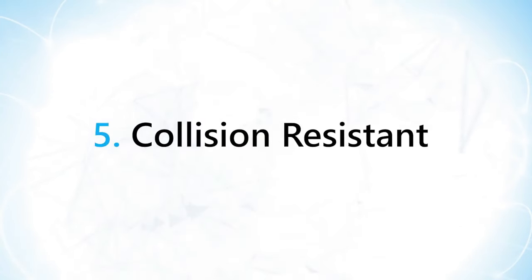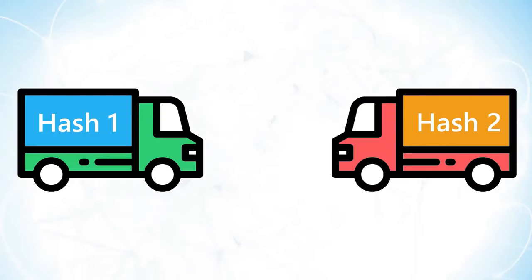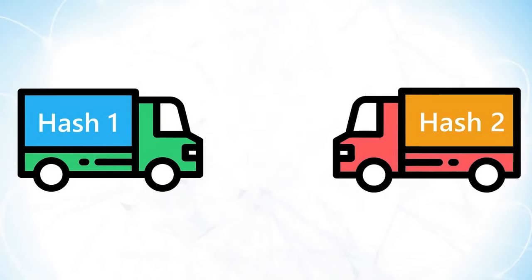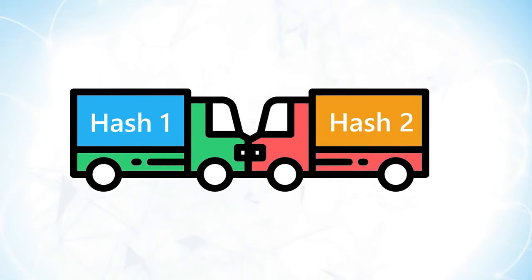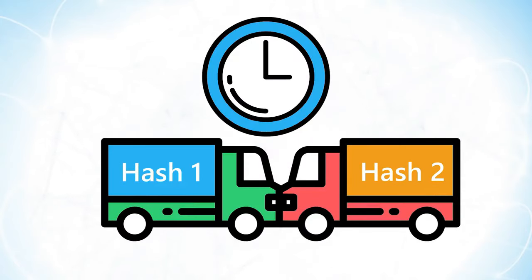Property 5: Collision resistant. Collision resistance means that each input will have its own unique hash. Having two different inputs that result in the same hash is known as a collision. No hash function is completely collision-free, but, much like the timeline of the brute force attack we described before, it takes so long that it doesn't matter.